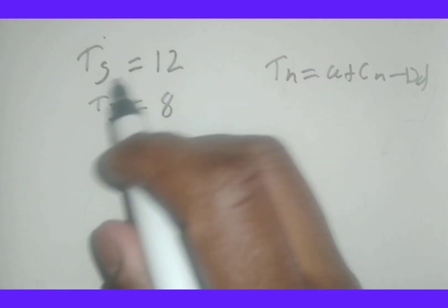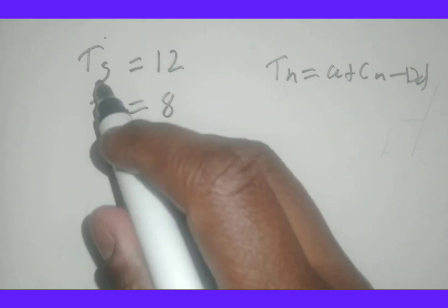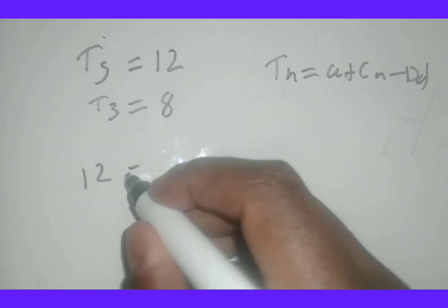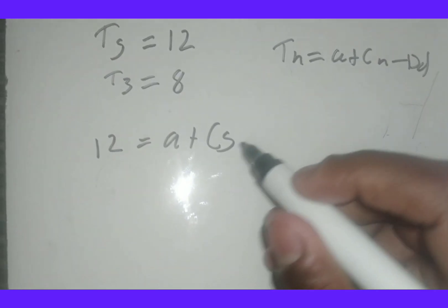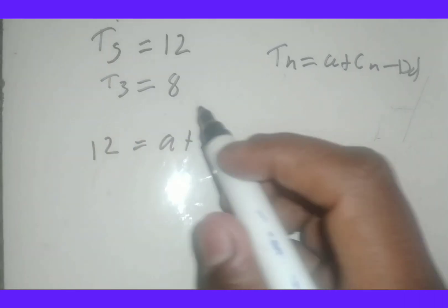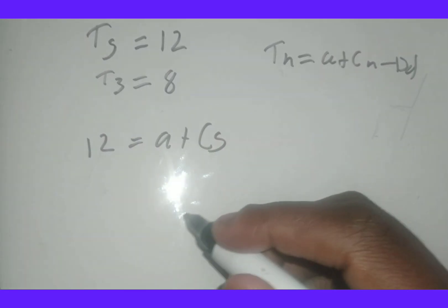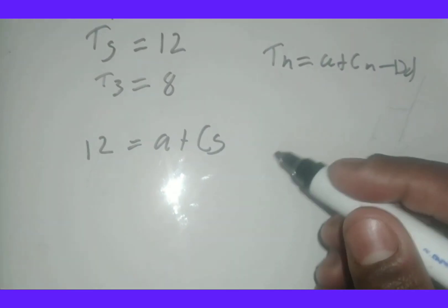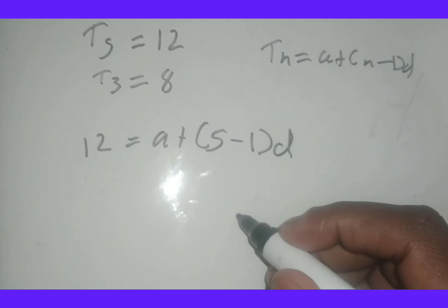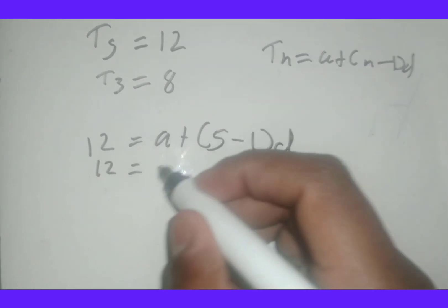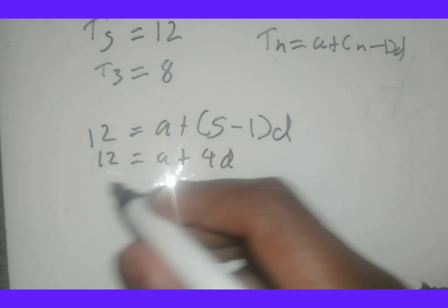What you do is substitute this information into the equation. We know that t5 is 12, so 12 equals a plus, since n is 5, we get 5 minus 1, which is 4, so we have 4d. That's our first equation. We have two unknowns, so we need two equations.